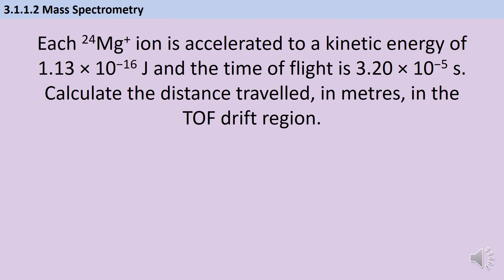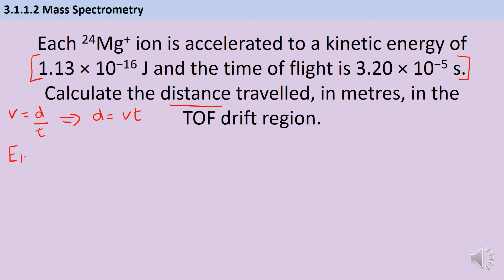In the second type of calculation, we're going to calculate how long the flight tube is when we know what the kinetic energy is and we also know what the time of flight is. In order to work out distance, I need to use v = d/t, rearranged so that distance is velocity times time. I know what the time is because that's given in the question, and to work out velocity I'm going to use the kinetic energy equation as printed in the exam, which I need to rearrange.